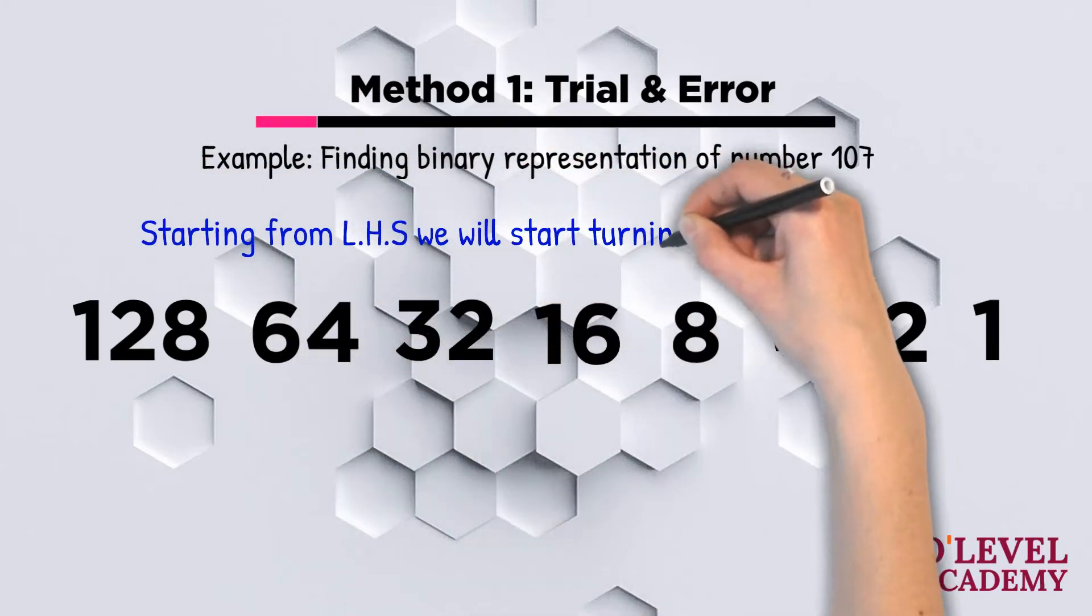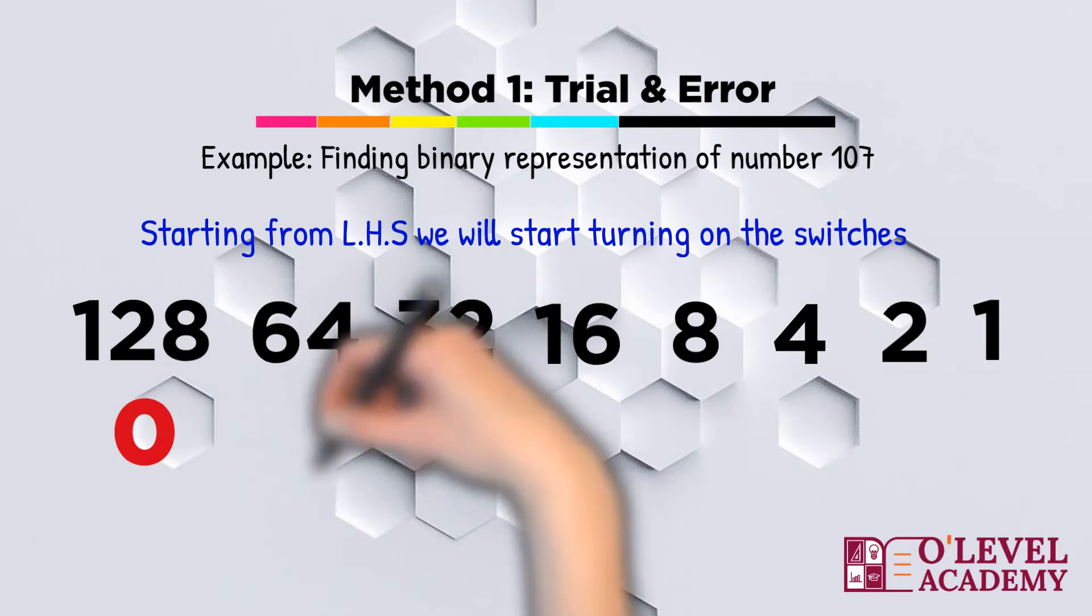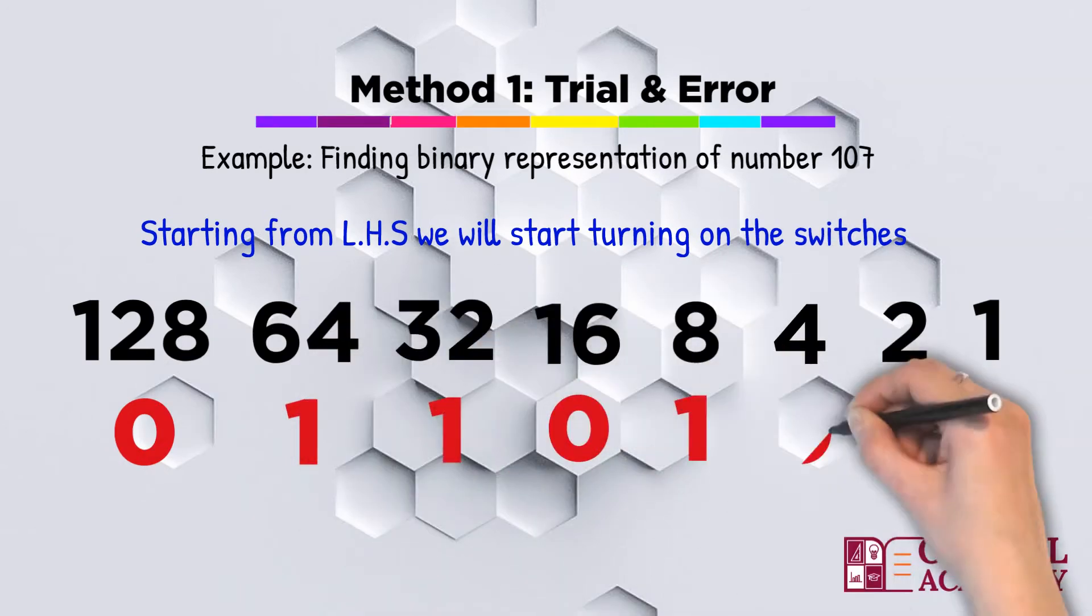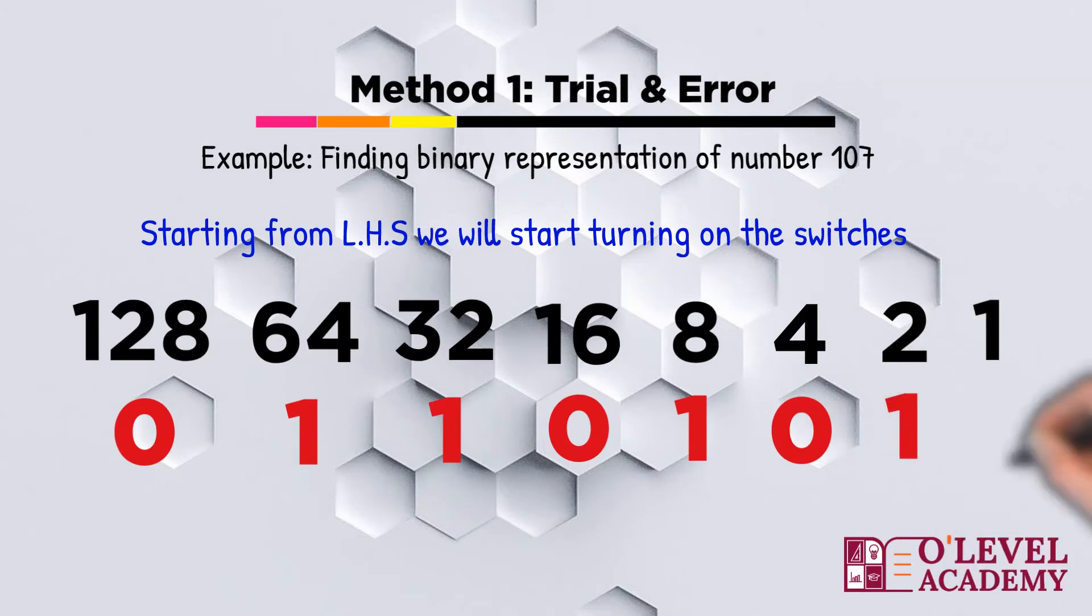Now starting from our left hand side we will start turning ON the switches. We have seen the switch 128. The value is greater than 107 so this switch needs to be OFF. Then we move to 64. The value is less than 107 so we will turn ON the switch.